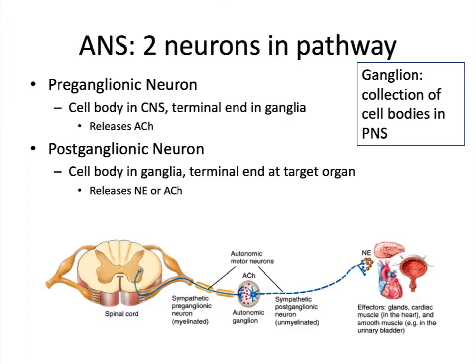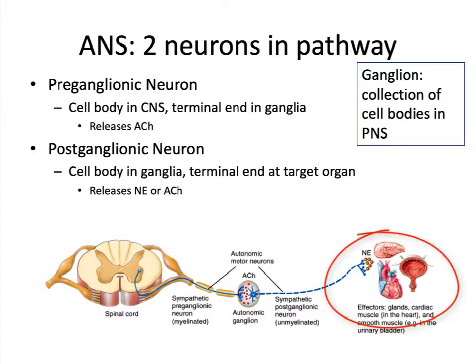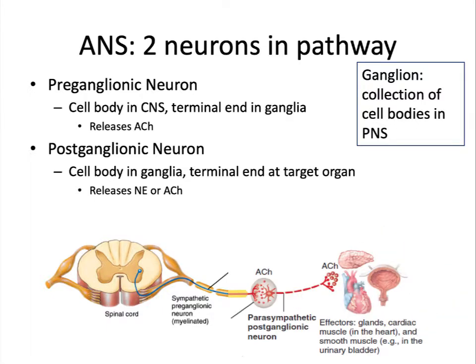All preganglionic neurons release the neurotransmitter acetylcholine at the ganglion. The postganglionic neuron releases either acetylcholine or norepinephrine to stimulate the effector. Sympathetic postganglionic neurons will release norepinephrine. Parasympathetic neurons will release acetylcholine.